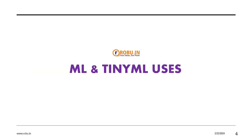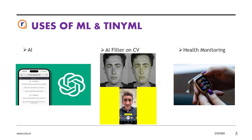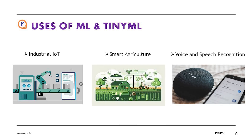So why do we use TinyML? There are a few use cases such as health monitoring through your smartwatch or health tracker devices, industrial IoT to sense any unusual behavior in motors or industrial devices, smart agriculture to detect crop disease or soil moisture over large parts of land, and also voice and speech recognition in home devices like Alexa or Google Home.